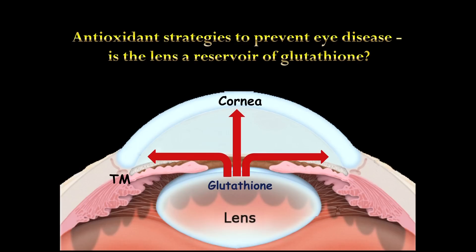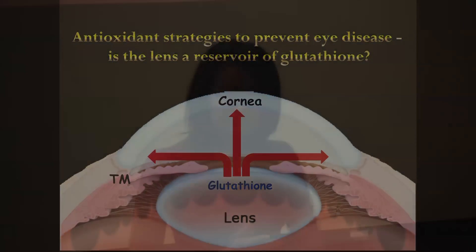But as we grow older, levels of glutathione start to fall, especially in the lens of our eye. This then leads to damage which is seen as a cataract.